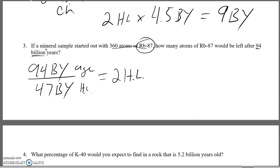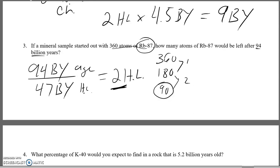There are two ways to approach this problem. Approach A: since it's been through two half-lives and started with 360 atoms, we cut it in half twice. After one half-life: 360 → 180 atoms. After the second half-life: 180 → 90 atoms. So the total remaining after two half-lives is 90 atoms of rubidium-87.